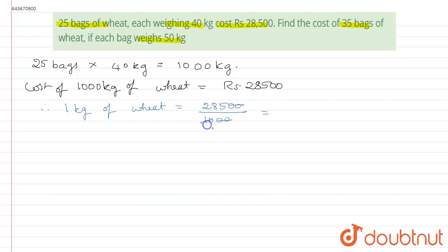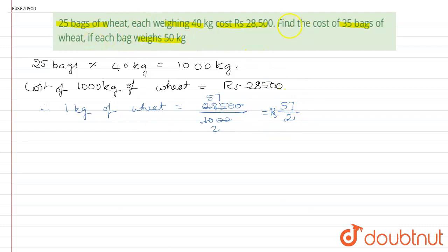We simplify 28,500 ÷ 1,000 by cancelling zeros and dividing both numbers by 5: 28,500 ÷ 1,000 simplifies to 57/2. So 1 kg of wheat costs rupees 57/2. We keep this as a fraction for now.